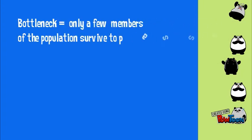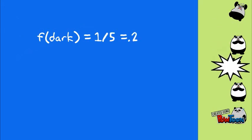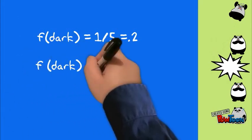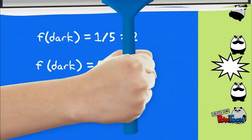Our population size gets cut down to 5. In this population, the frequency of our dark panda is still .2. Now let's suppose another random event takes place — again, a blast that takes out one of our dark pandas. This time, we are left with 0% of the population being dark. The rare alleles are more likely to be lost since only a few individuals carry them. Rare events have these larger effects on small populations.